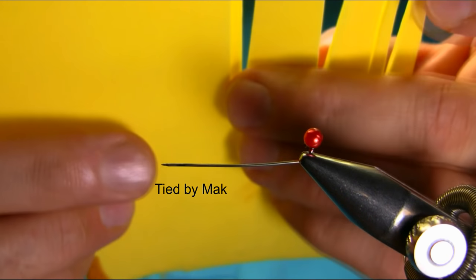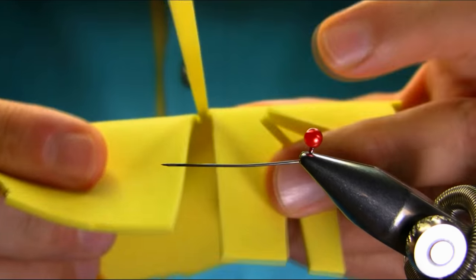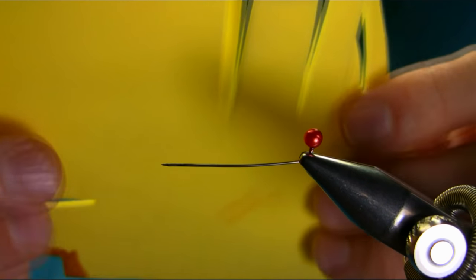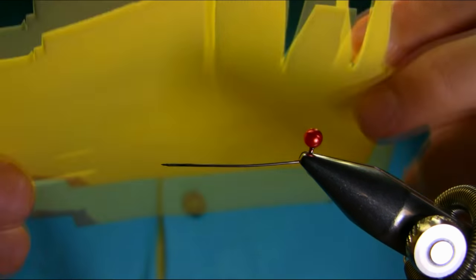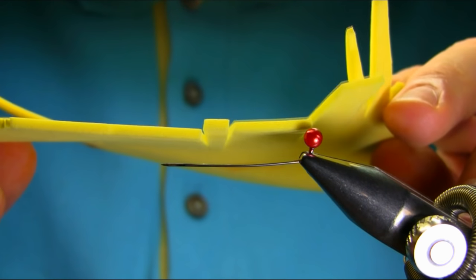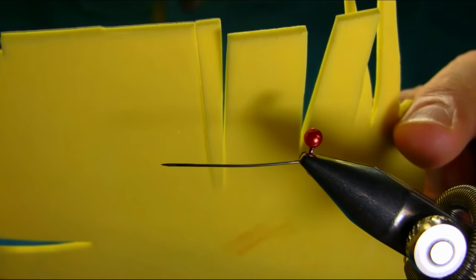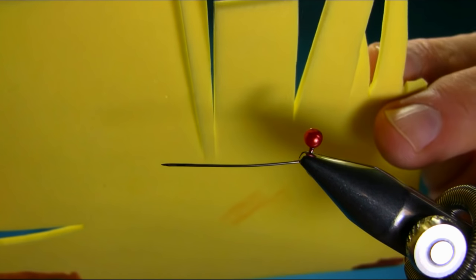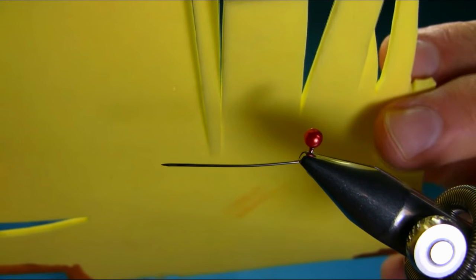Hi, today I'm going to show you how to do segmentation on the daddy long legs body. You need this foam sheet, closed cell foam, two millimeter thick in yellow color, but you can use different colors - brown, black, any color you want.